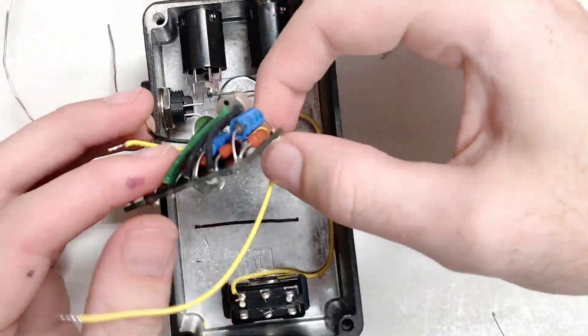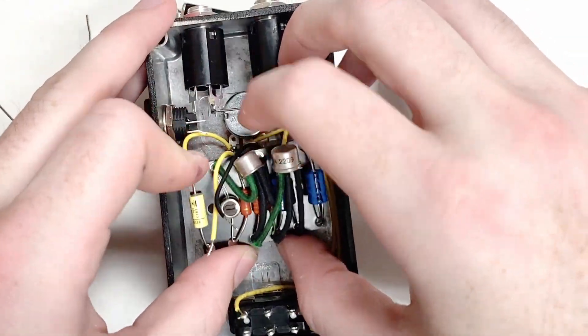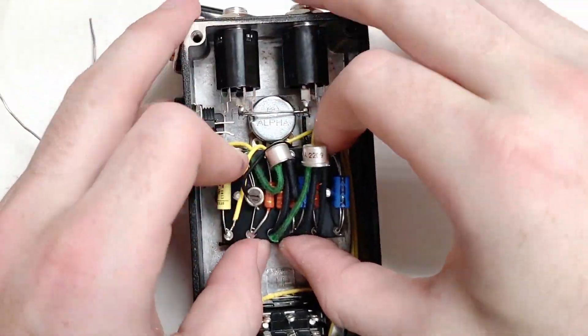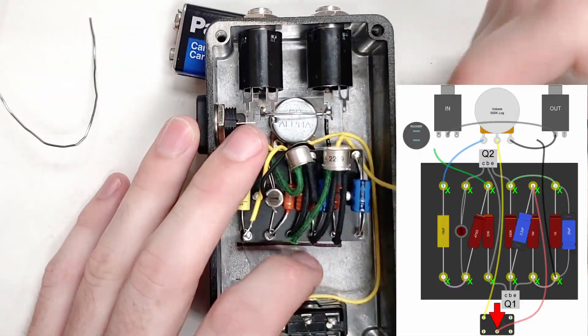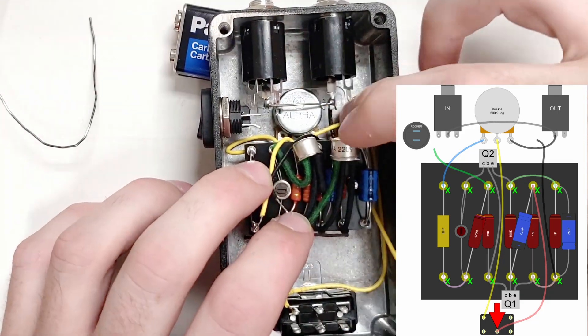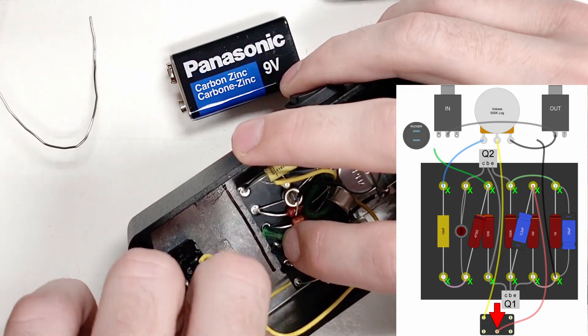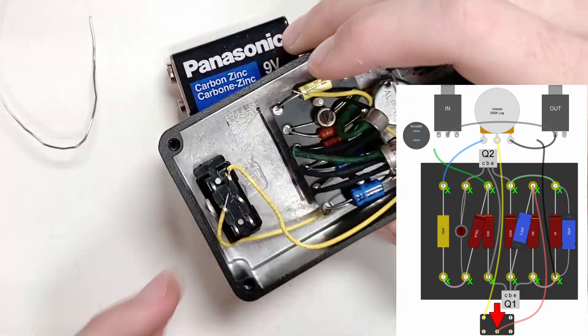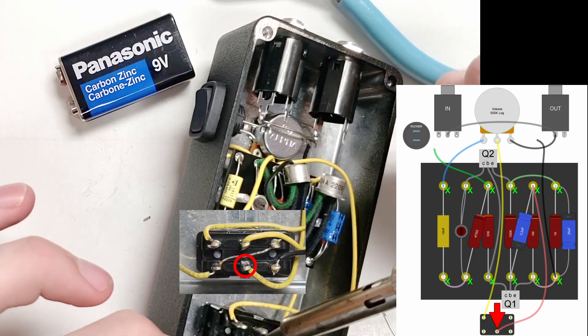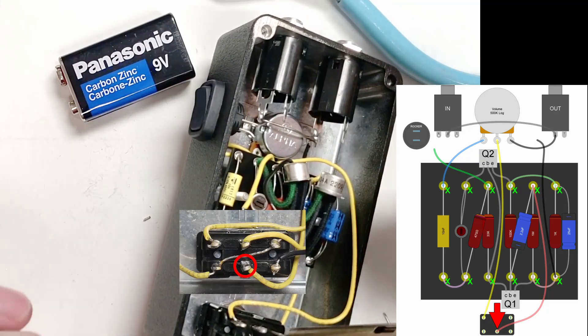Now that all of the potentiometer connections are in place, we can install the board in place and solder the remaining off-board connections. I pulled the switch just slightly out of frame here, but I'm soldering this foot switch connection here, which is the effect output.